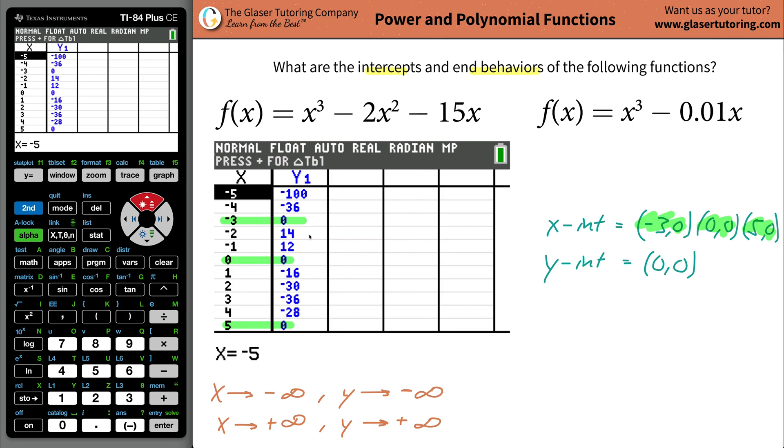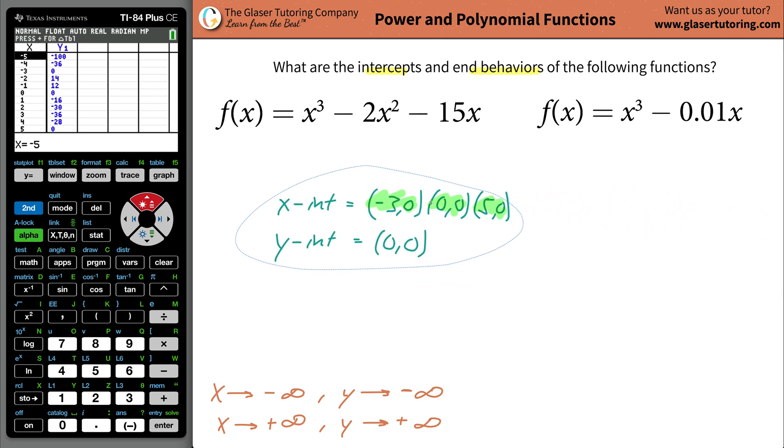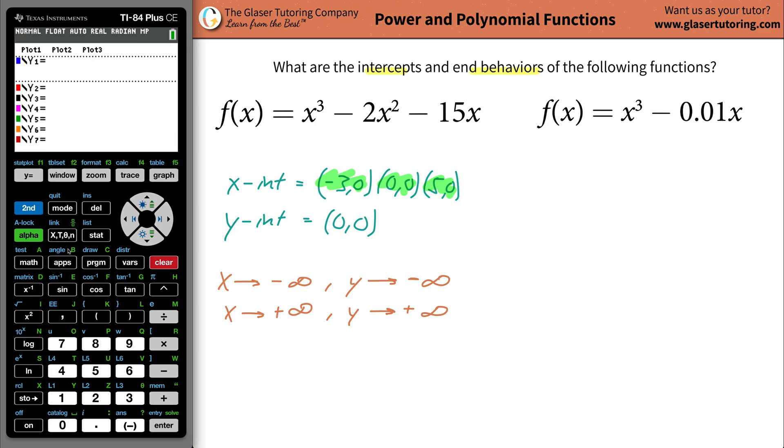So let's get rid of all this stuff. And we'll bring this on over to this side. Now let's take a look at the second function. So again, go to your y equals, just clear it out, and let's plug this in. So x cubed, x cubed, minus 0.01x.